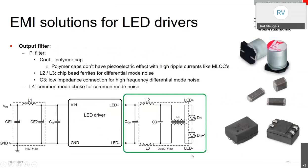For the output filter, we again use a pi filter topology. As the output capacitor we use a polymer capacitor, which avoids the piezoelectric effect that MLCCs exhibit with high ripple current. Two chip ferrite inductors L2 and L3 filter differential mode noise. An MLCC provides a low impedance path for high-frequency differential mode noise. To address common mode issues — especially with longer cables and traces that can pick up or radiate noise — a common mode choke is added. The combination of this filter addresses both common mode and differential mode noise, and the capacitors also reduce ripple for lower junction temperature.